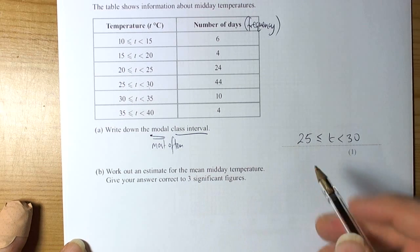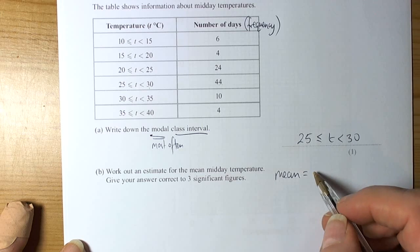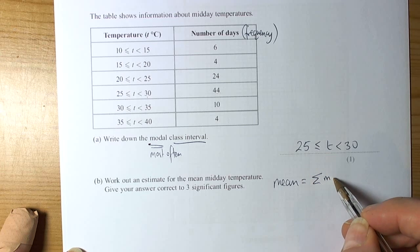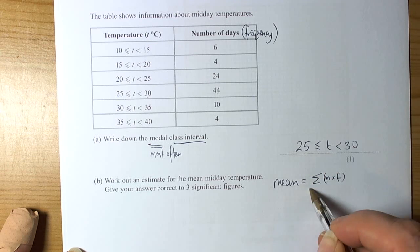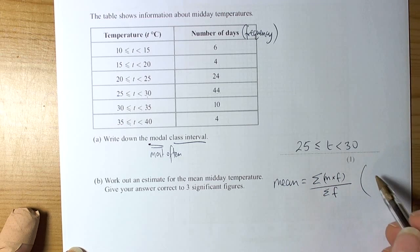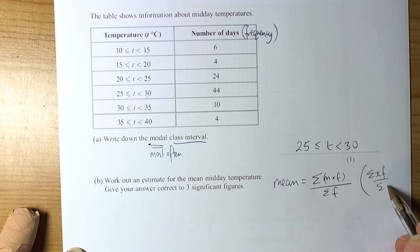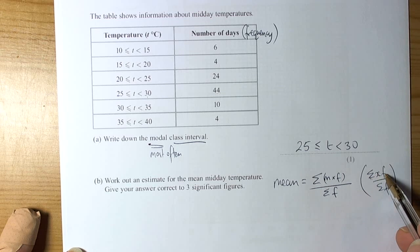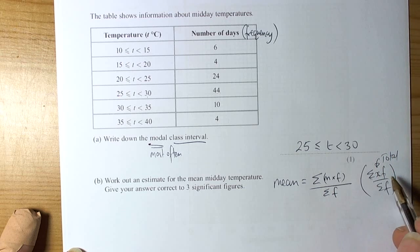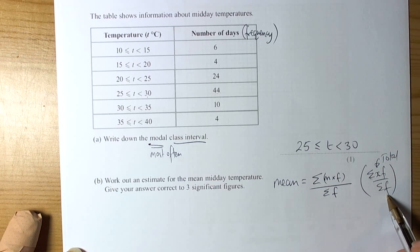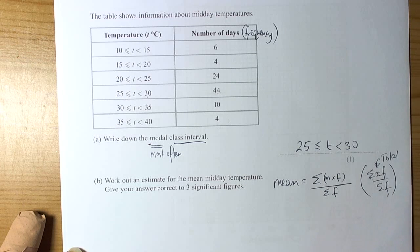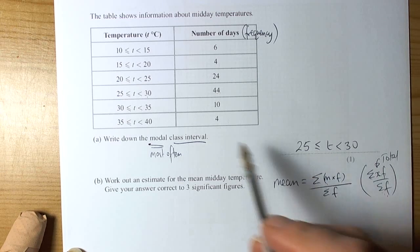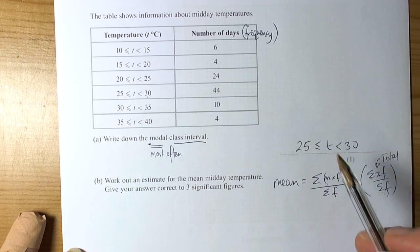Then the next question says, work out an estimate for the mean. So in a way we should really have a formula in our mind for the mean average of grouped data. The formula is the sum of the midpoints times the frequencies, divided by the sum of the frequencies. When you've got grouped data, we don't actually know the exact temperatures, we just know the intervals that they were in, so we use the midpoint.